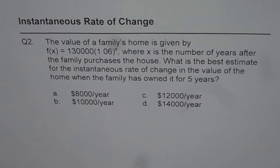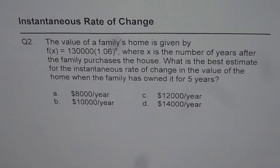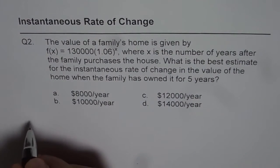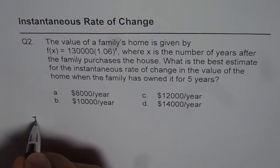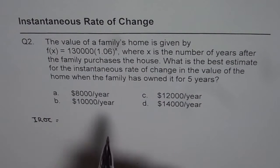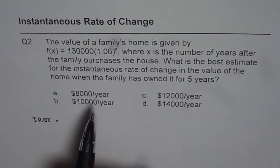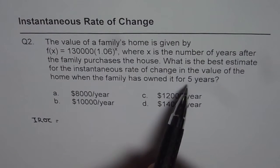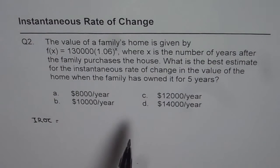You can pause the video, do your calculations, and then make an educated guess. Instantaneous rate of change is the rate of change at an instance — here, at 5 years.